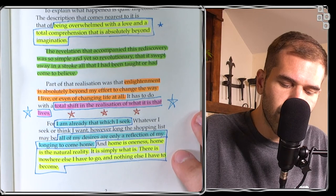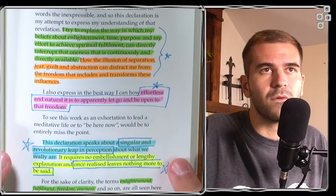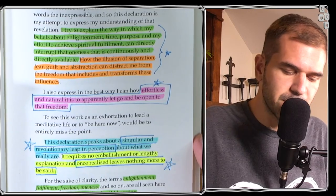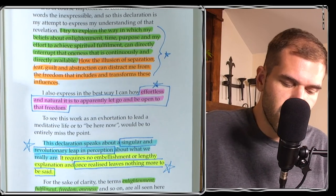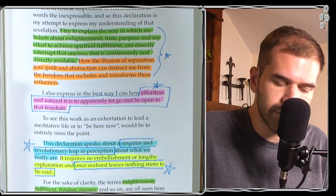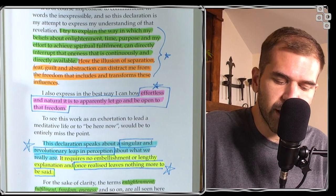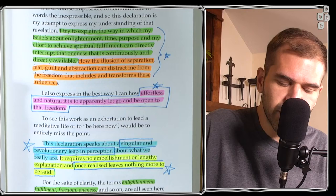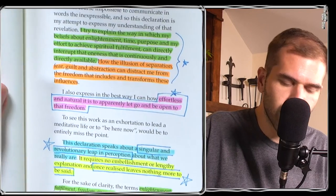Home is the natural reality and it simply is what is. There is nowhere else I have to go and nothing else I have to become. I try to explain the way in which my beliefs about enlightenment, time, purpose, and my effort to achieve spiritual fulfillment can directly interrupt that oneness that is continuously and directly available. How the illusion of separation, fear, guilt, and abstraction can distract me from the freedom that includes and transforms these influences. Effortless and natural, it is to apparently let go and be open to that freedom. A singular and revolutionary leap in perception, once realized, leaves nothing more to be said. Enlightenment, fulfillment, freedom, oneness, the same as what I call liberation.